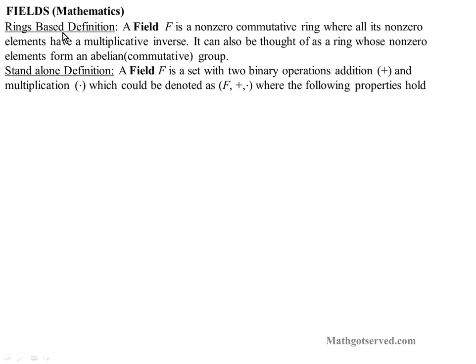The first one is the ring-based definition. There are two ways that you can define fields using rings. A field F is a non-zero commutative ring where all its non-zero elements have a multiplicative inverse. Another way you can define it is as a ring whose non-zero elements form an abelian group. Abelian is another word for commutative. So if the non-zero elements of a ring form an abelian group, then that ring is a field.